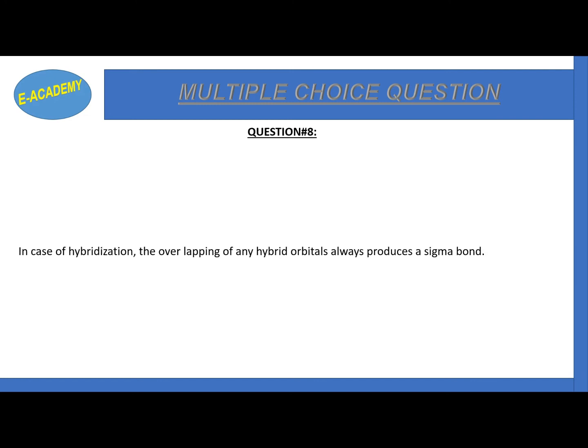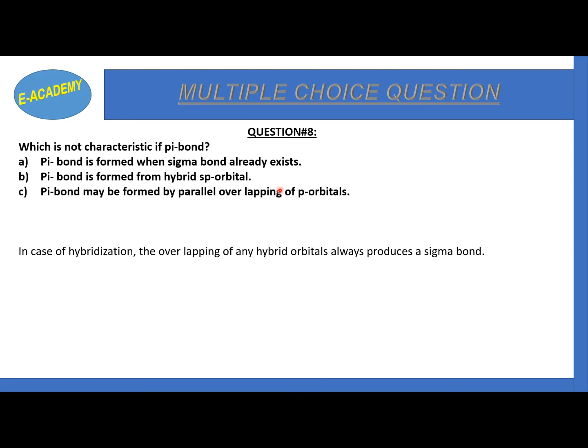Now question number 8, which is not characteristic of pi bond? Pi bond is formed when sigma bond already exists. Pi bond is formed from hybridized p orbital. C, may be formed by parallel overlapping of p orbital. D, may be formed from lateral overlap of atomic orbital. The correct option is option B.